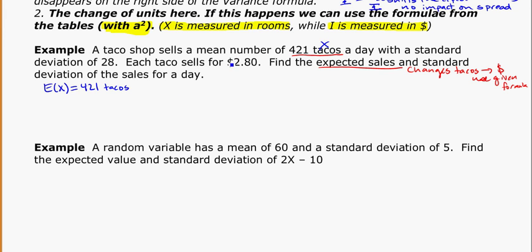My variance, well, I have to figure out what my variance is from my standard deviation. So the variance of x is going to be equal to 28 squared. That's your standard deviation squared. Standard deviation of 28 tacos, and I'm going to square that for my variance.